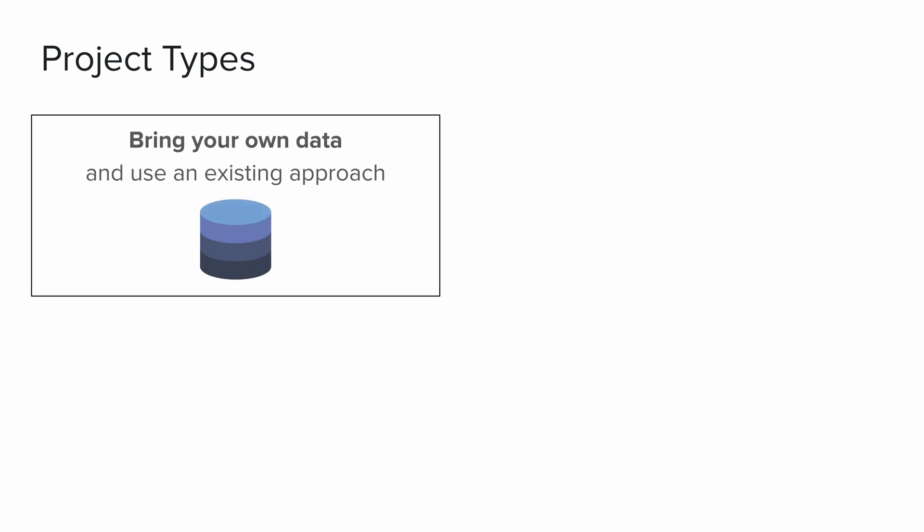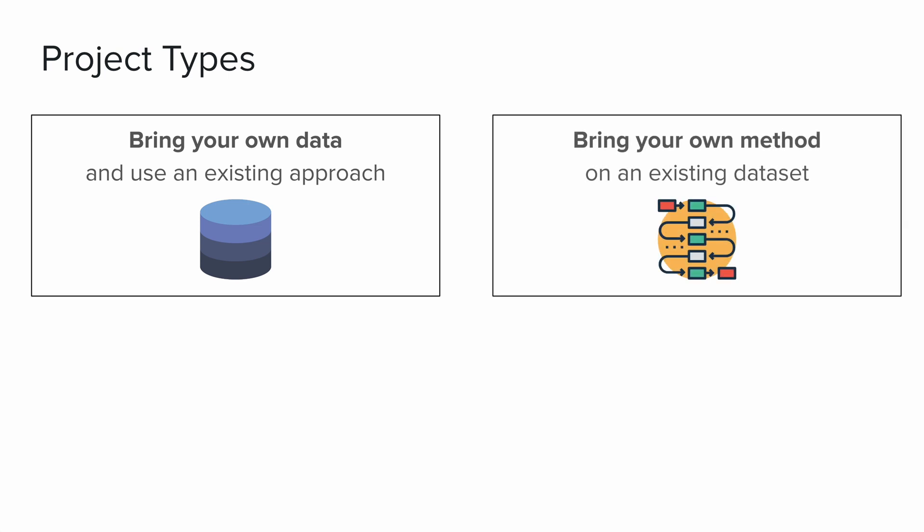The first project type is 'Bring Your Own Data': you use an existing approach and collect a dataset to use with that approach. The second project type is 'Bring Your Own Method' — basically flip those two things around. You take an existing dataset and try to develop your own machine learning model, pick some existing baseline, try to improve it, and see how far you can get with that dataset.